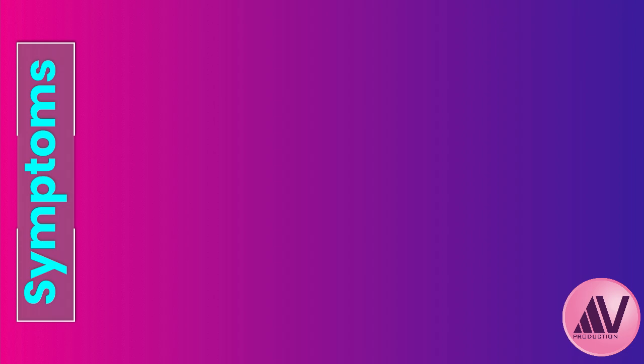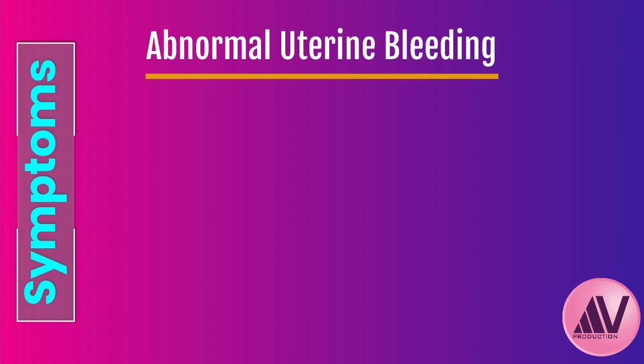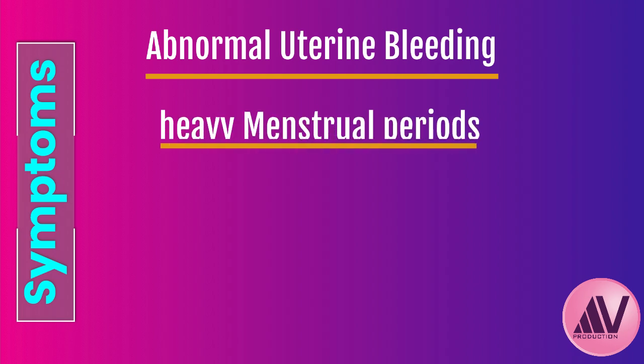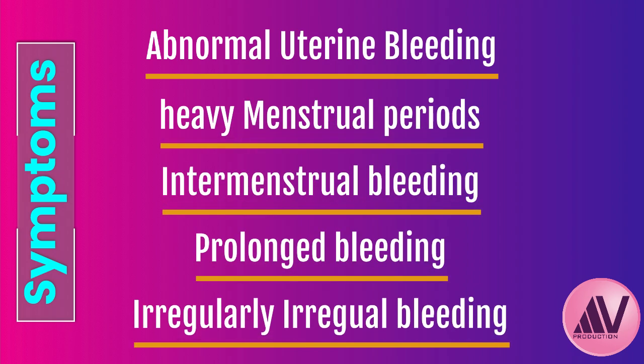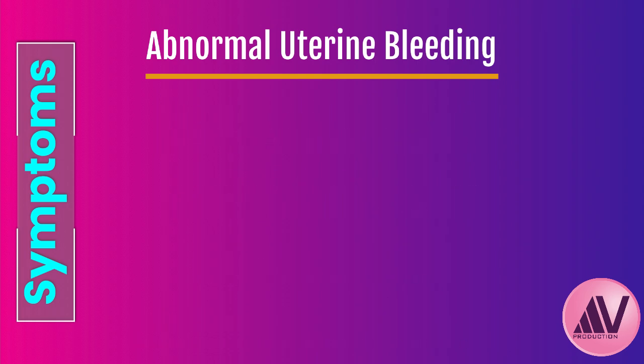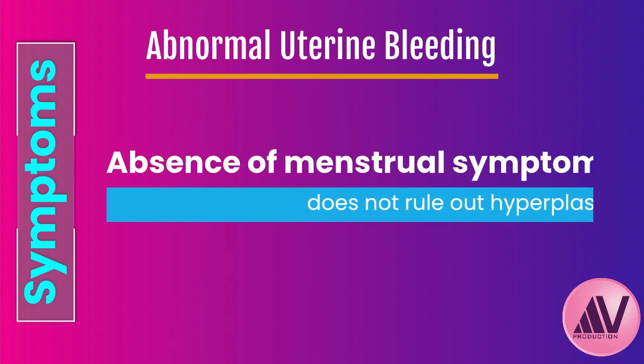The most common red flag is abnormal uterine bleeding — heavier periods, bleeding between periods, periods that last much longer, or irregular and unpredictable bleeding. Basically any change from what's normal for that individual. Importantly, some women don't have changes in their bleeding patterns, so having regular periods doesn't completely rule it out, though bleeding is the most common sign.